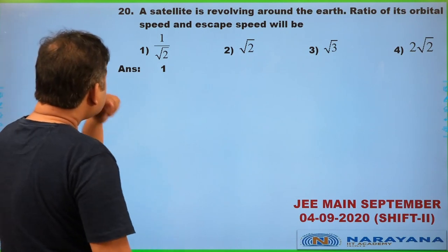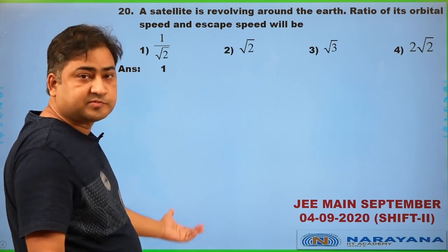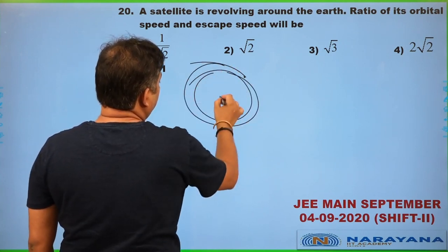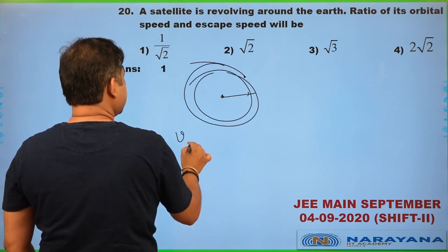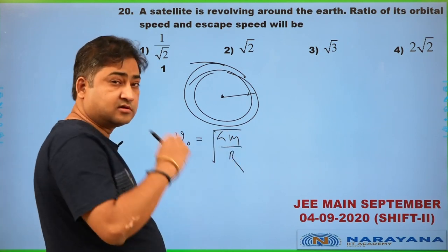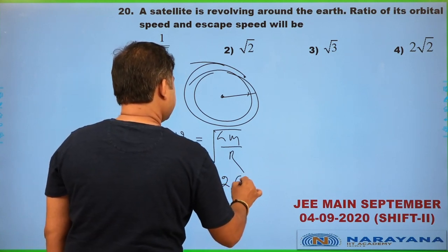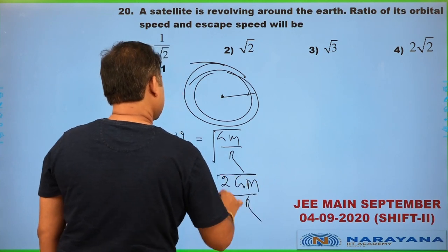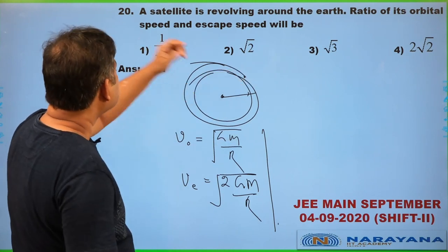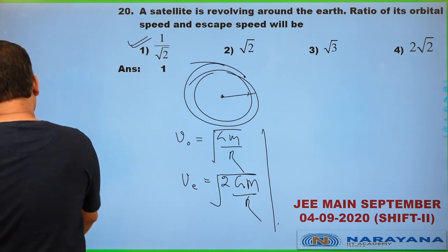Question 20: a satellite is revolving very close to Earth's surface. The ratio of orbital speed to escape speed is based on standard formulae. Orbital speed = √(GM/r); escape speed = √(2GM/r). The ratio of orbital speed to escape speed is 1/√2. Hence option 1 is the answer.